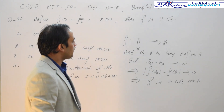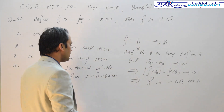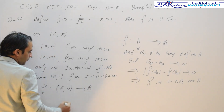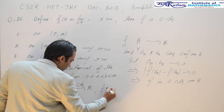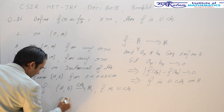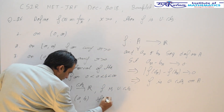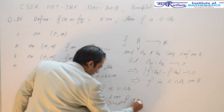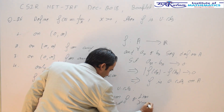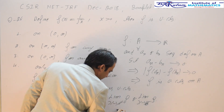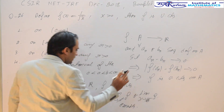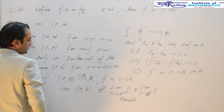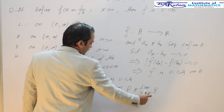Another result is: if f is a function defined on an open interval (a, b) to ℝ which is continuous, then f is uniformly continuous on (a, b) if and only if the right-hand limit at a and the left-hand limit at b both exist finitely. That is, a continuous function on an open interval is uniformly continuous if and only if the limits at the endpoints exist.